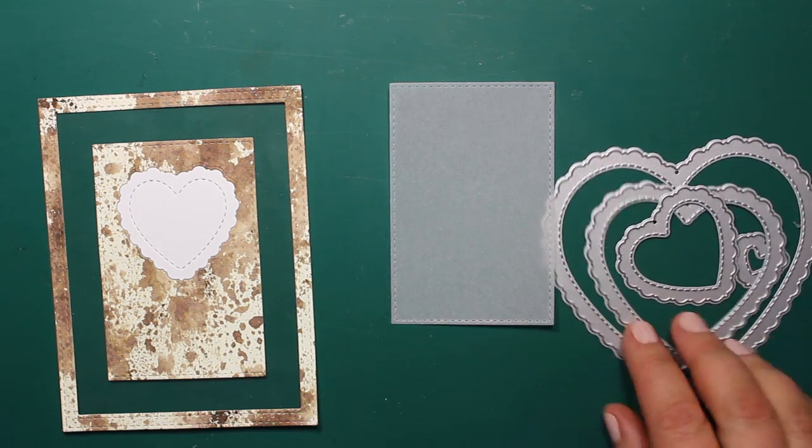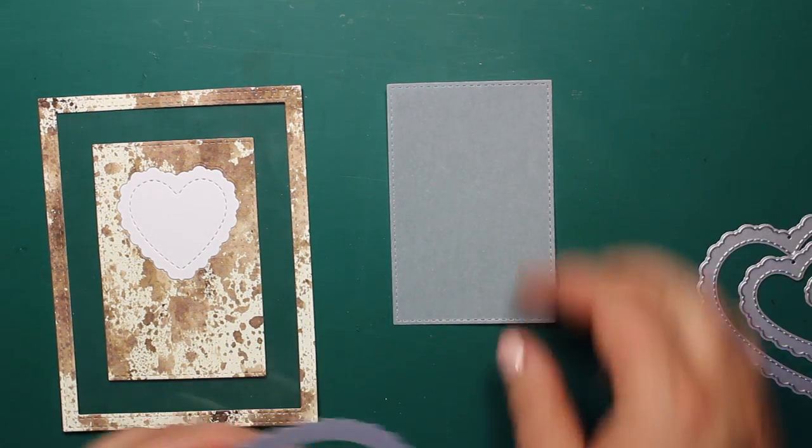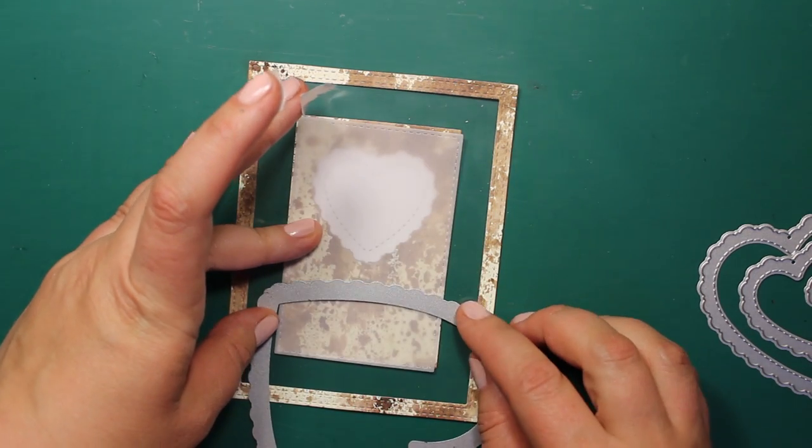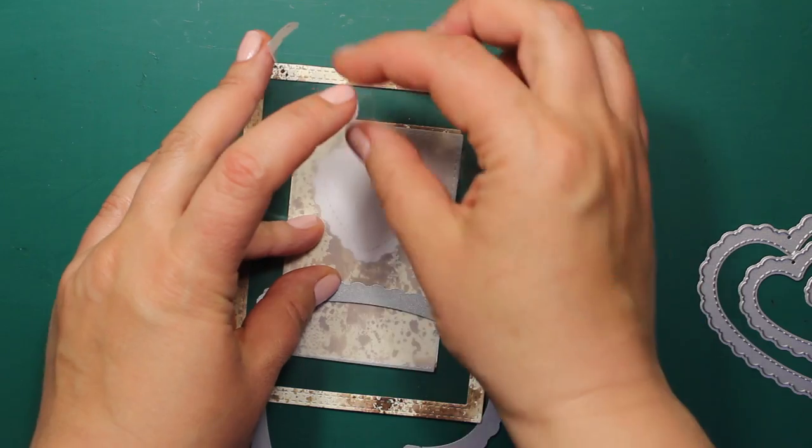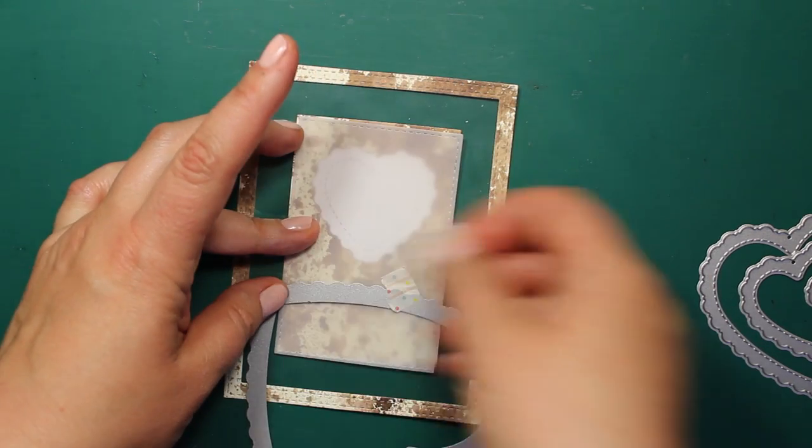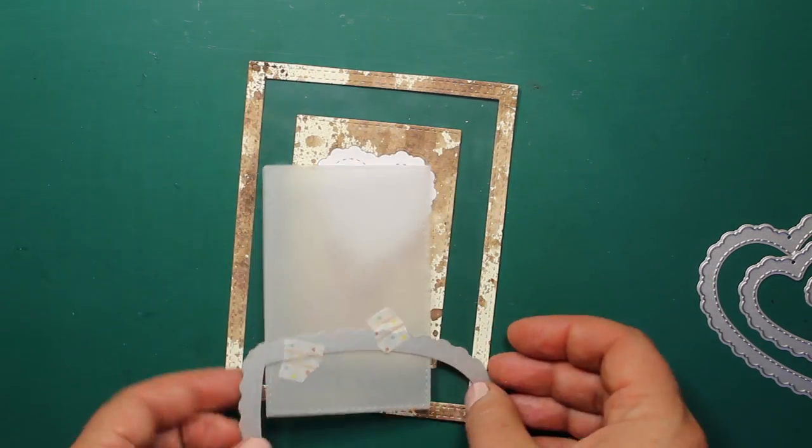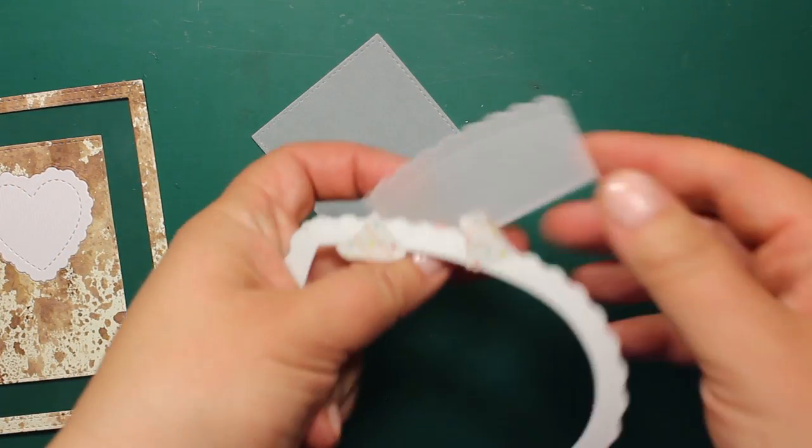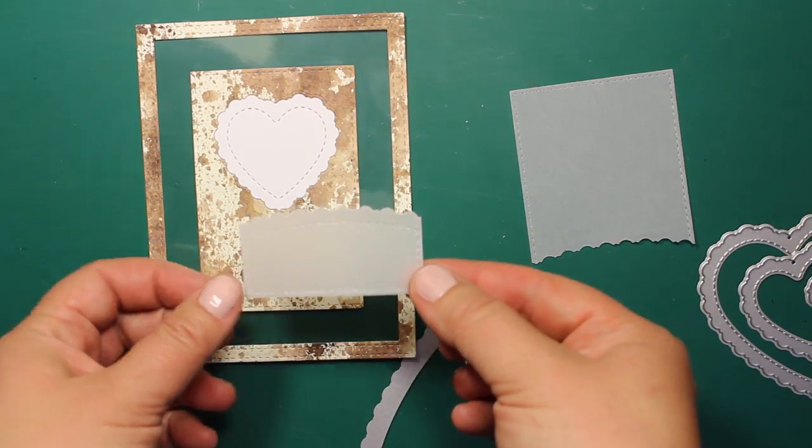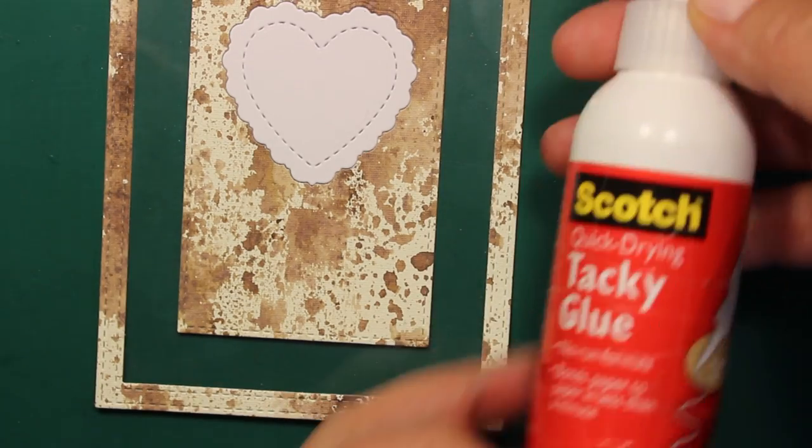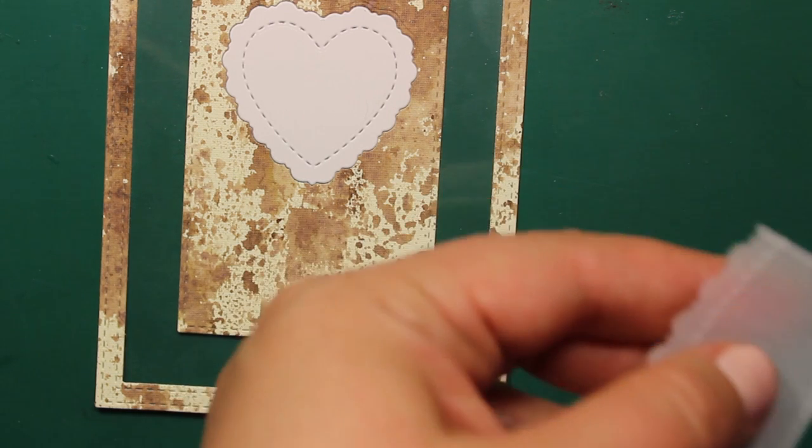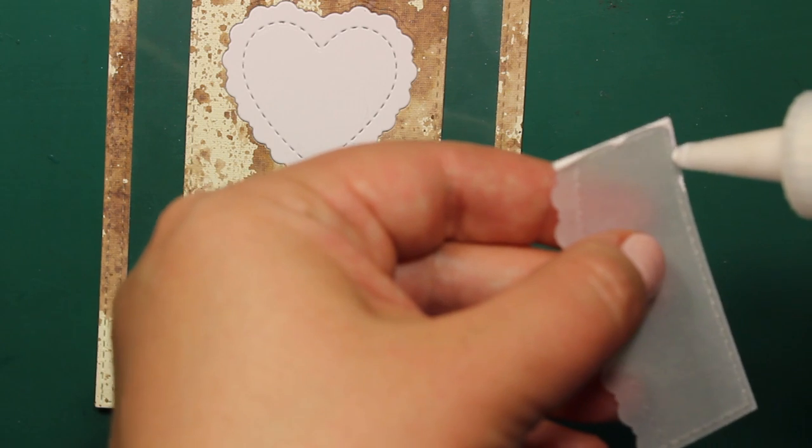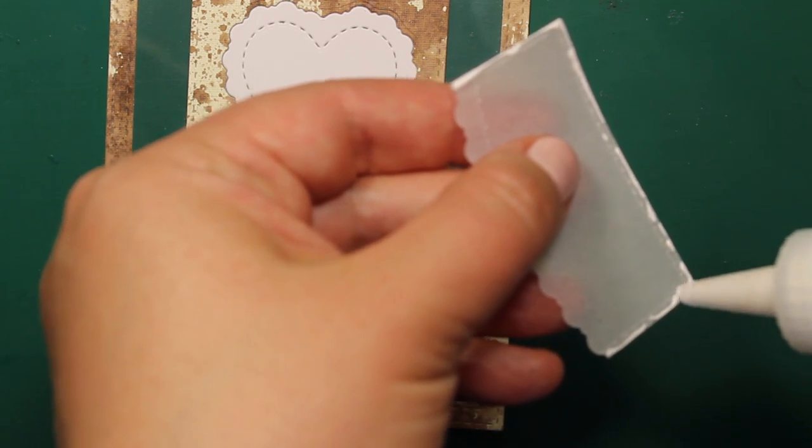Now I'm going to use the largest of the stitched hearts to create a vellum pocket with the arched decorative edge. I'm applying some tacky glue by scotch at three edges of the pocket, trying to squeeze out as little glue as possible. And then I'm attaching it on its place.